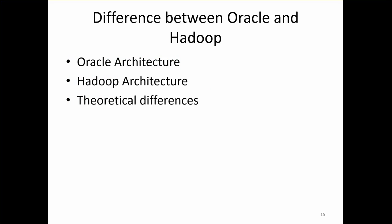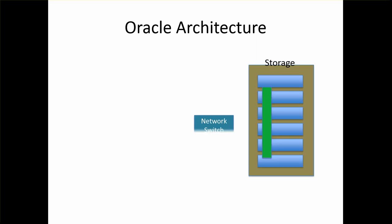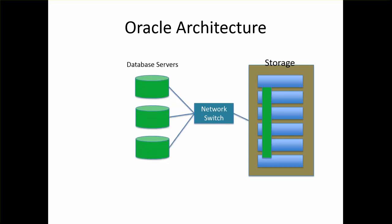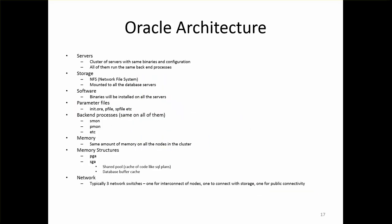Now we will talk about the difference between Oracle and Hadoop. Going back to Oracle architecture: you have storage, a network switch, database servers connected with one network switch, and another network switch for private interconnect between database servers. Getting into a little more detail, there will be a cluster of servers — as shown in our picture, we saw three of them. They are supported with backend processes like PMON, SMON, etc., running on all nodes in the cluster. And there are components like global enqueues to support it.